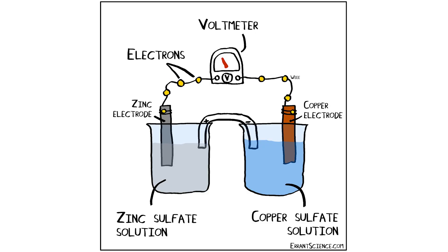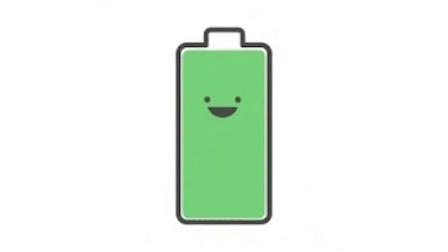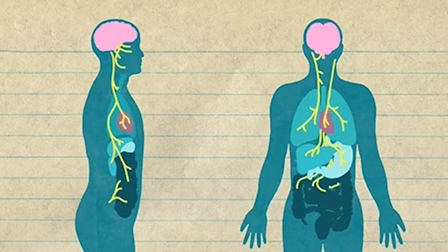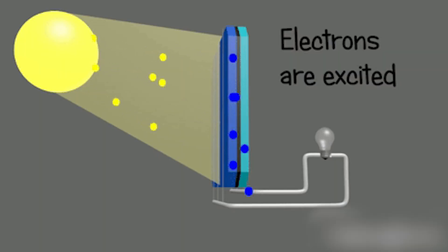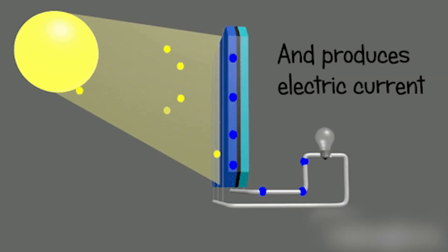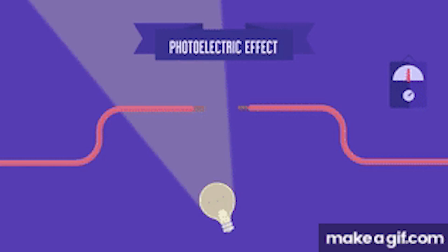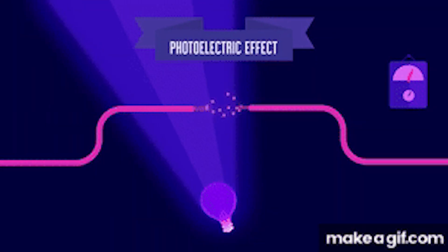Voltage can be created by the chemical reaction of two metals, which transfer electricity between them — this is called a battery. But what else generates chemical electricity? Try the human body. Light produces voltage when it shines on photosensitive materials, such as photovoltaic panels. This method follows the principles of photoelectricity and uses photons to remove electrons from a material matrix.